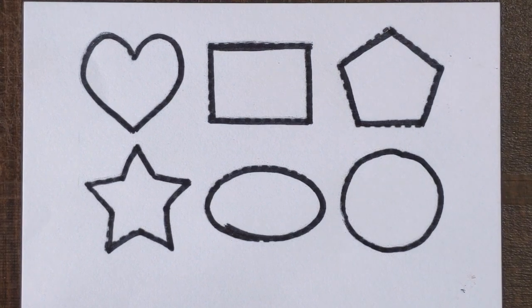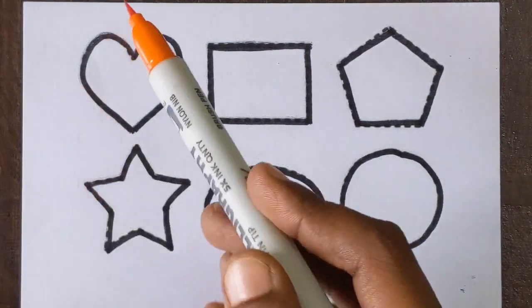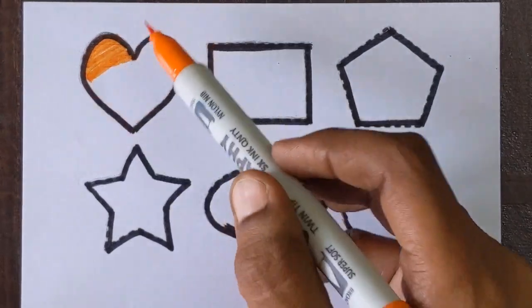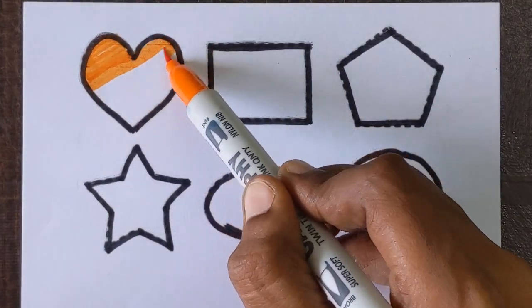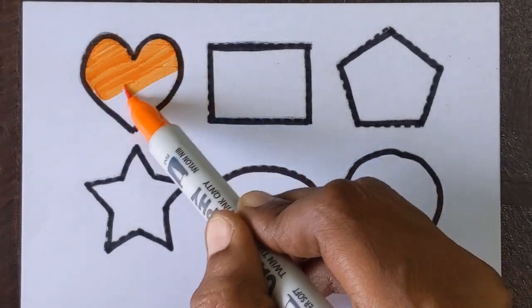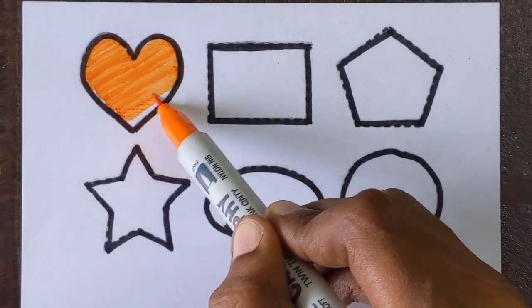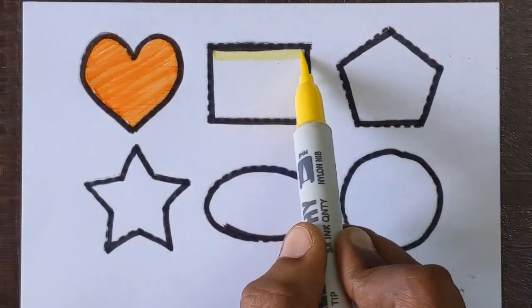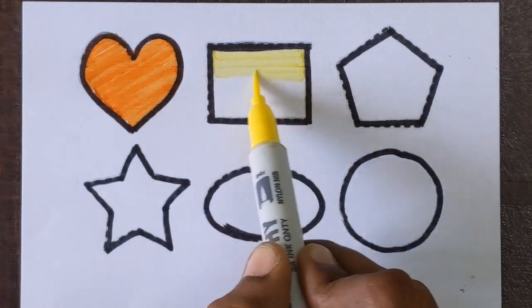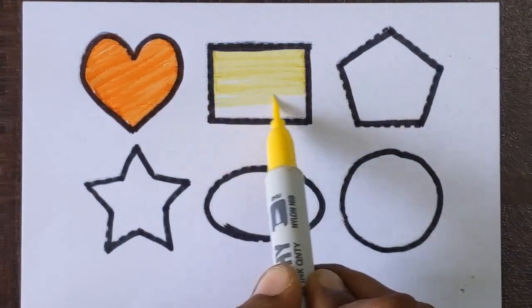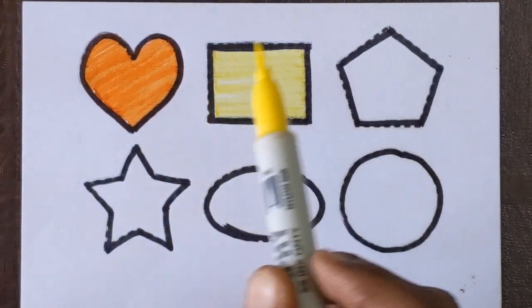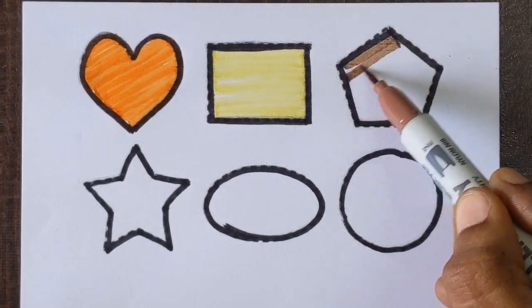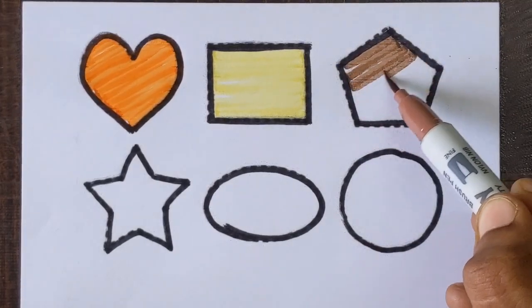Let's fill the colors now. Heart shape with orange color. This is rectangle with yellow color. Pentagon with a brown color.